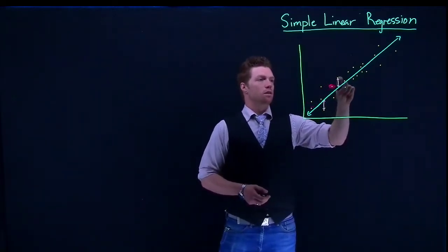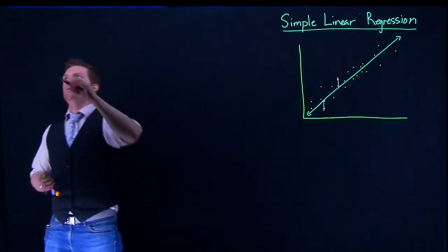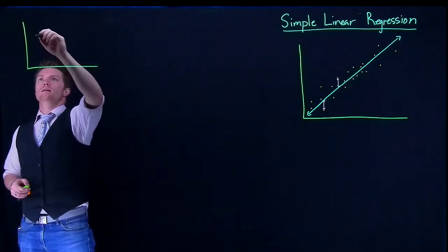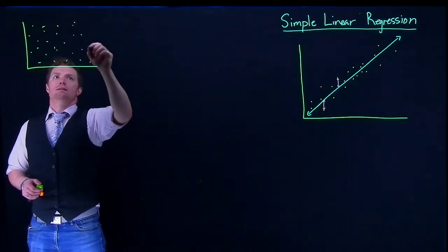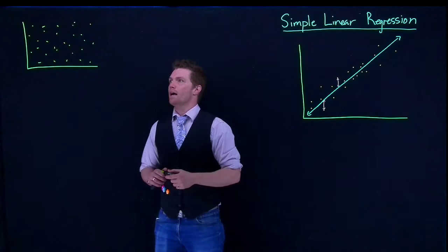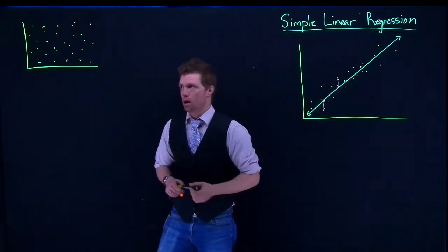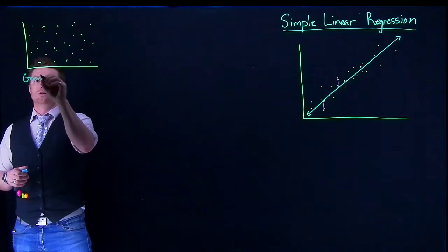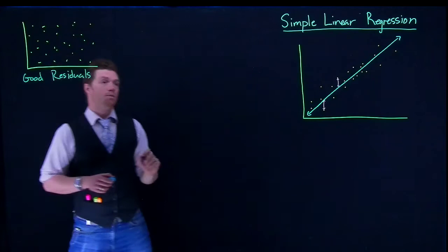If we take these residuals and plot them, we get another type of graph called a residual plot. A good residual plot kind of looks like a random cloud of data points — nothing really going on. That's actually exactly what we want; this is what is known as good residuals.